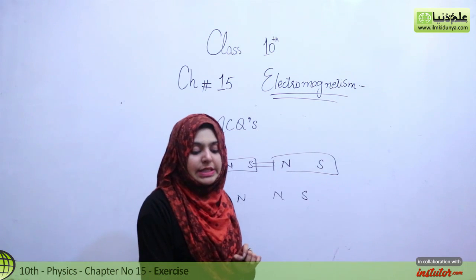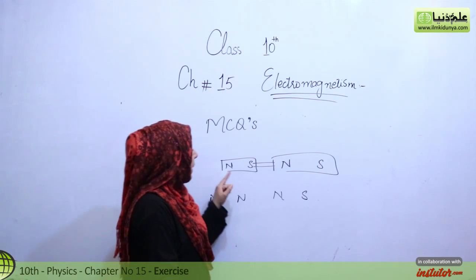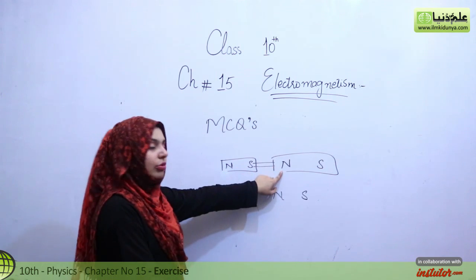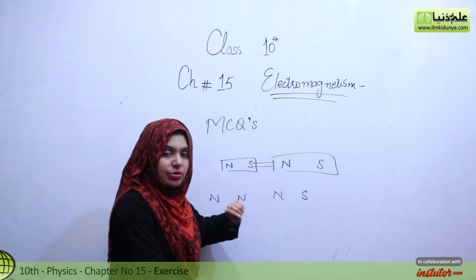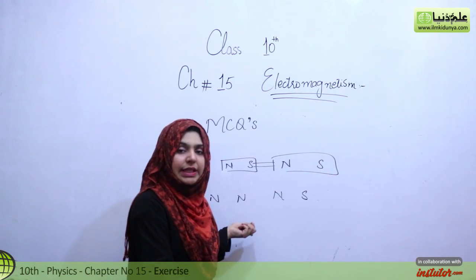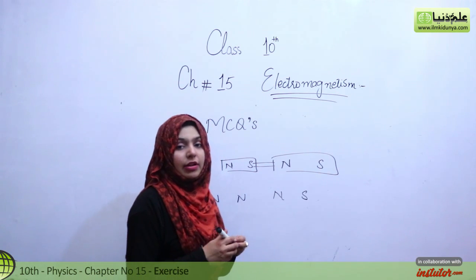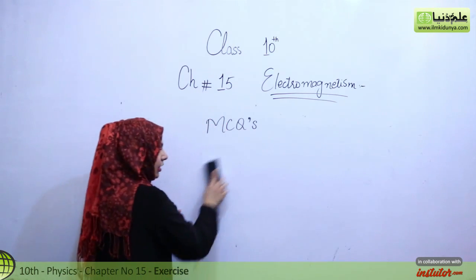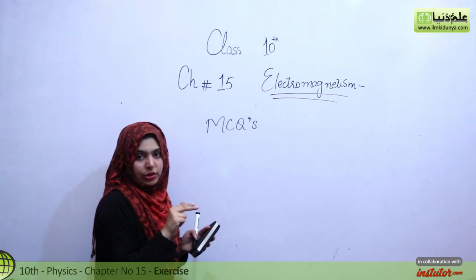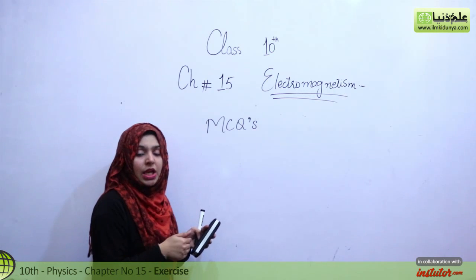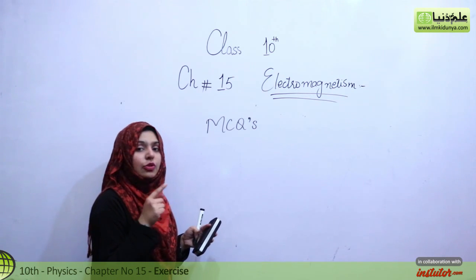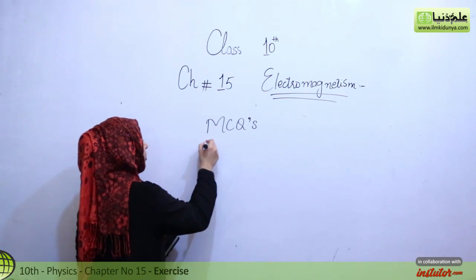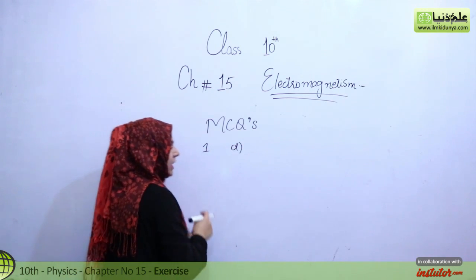For option C, magnetic poles do not affect each other — this is also incorrect, because if we divide a magnet into small pieces, north and south poles will always be present together. A single magnetic pole cannot exist in isolation. So the right option is D, which states that a single magnetic pole does not exist.